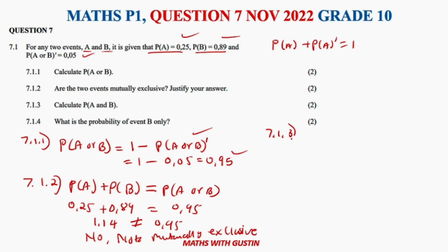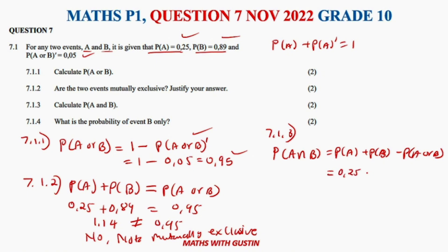Question 7.1.3 asks us to calculate P(A and B). Using the formula: P(A and B) equals P(A) plus P(B) minus P(A or B). That gives us 0.25 plus 0.89 minus 0.95, which equals 0.19. If you don't get 0.19, leave a comment and I'll assist you.